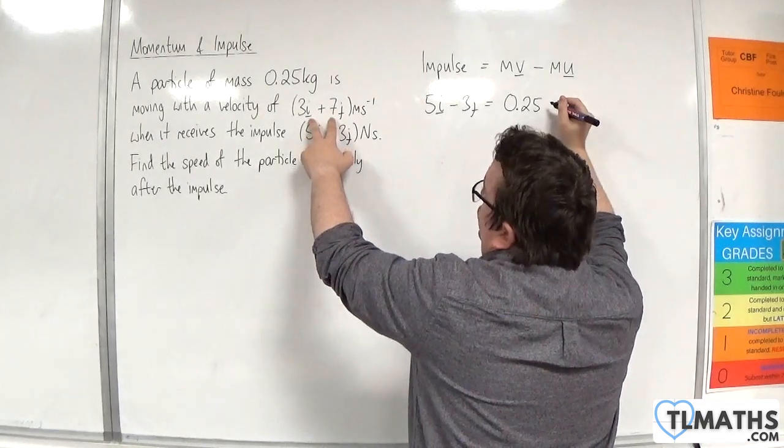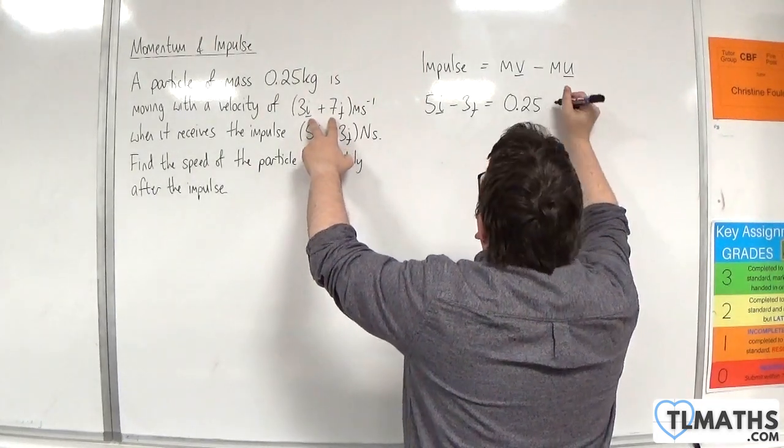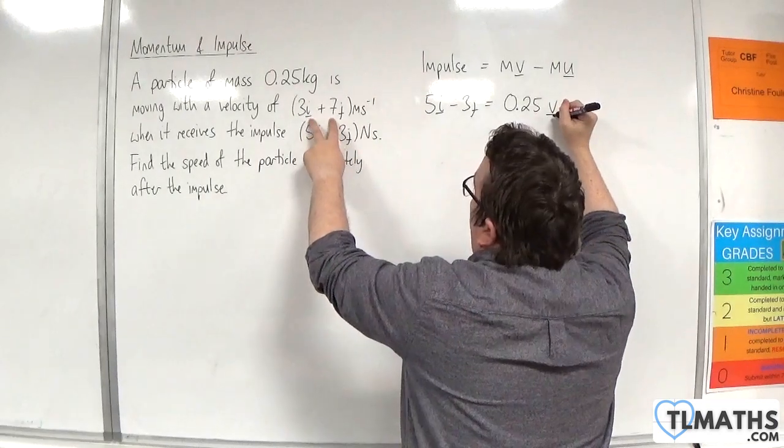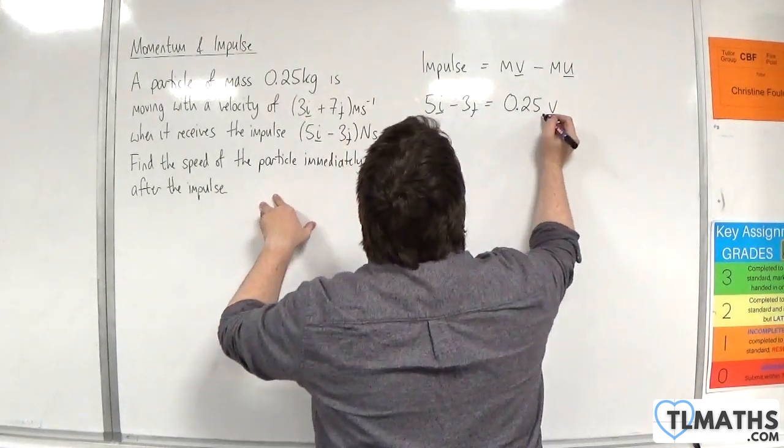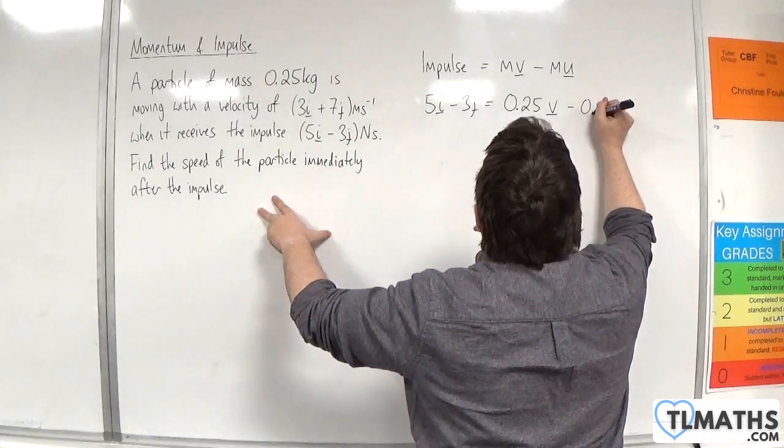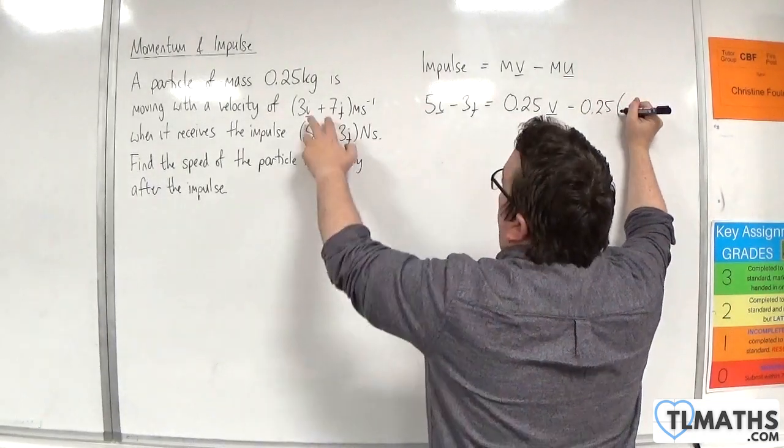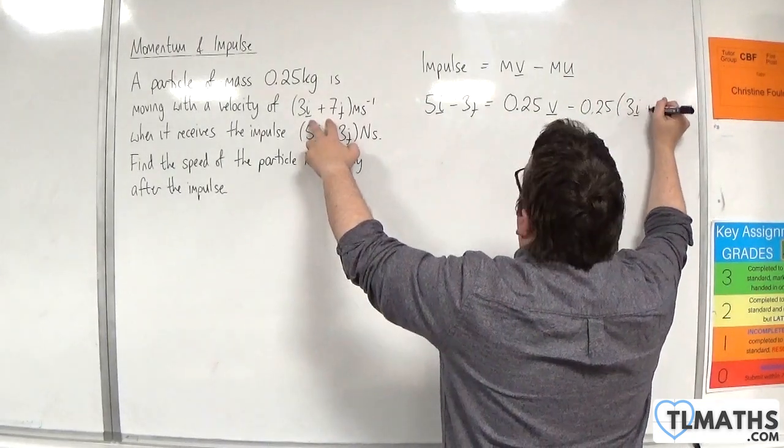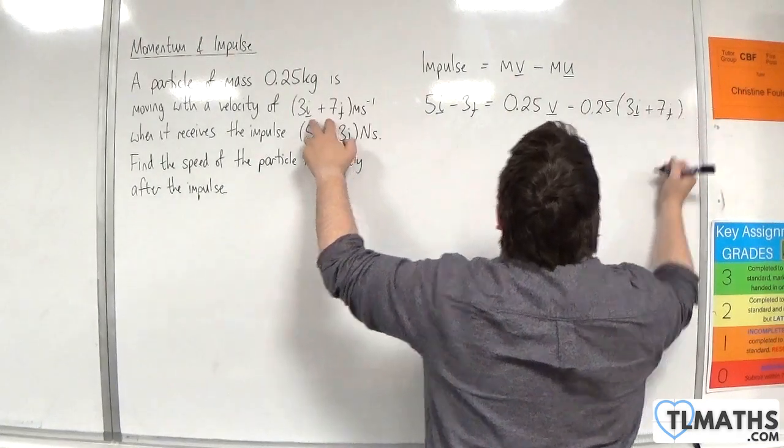But that is the initial velocity. We want to find the final velocity and then find the speed. So 0.25v - 0.25 times (3i + 7j) meters per second.